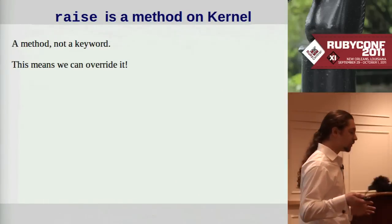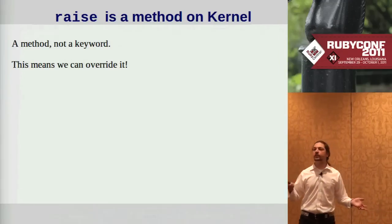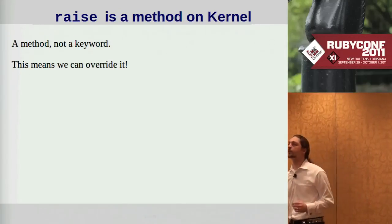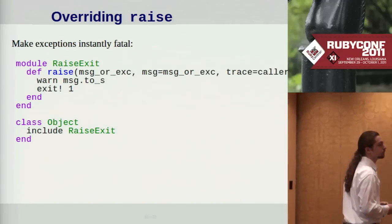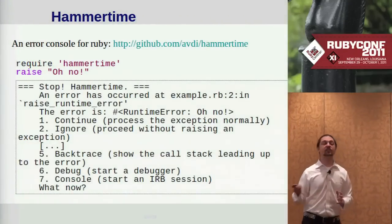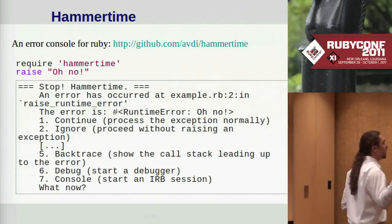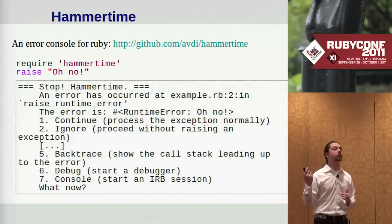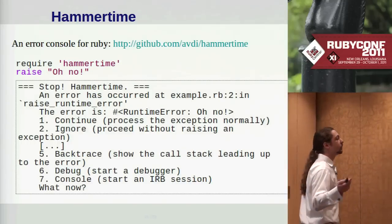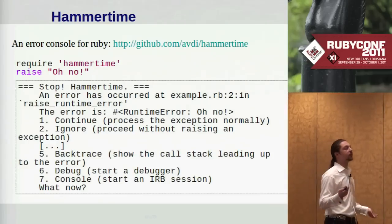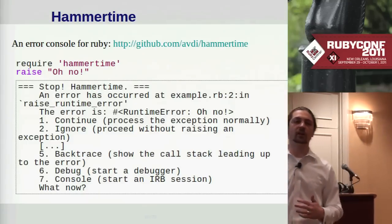One thing some people don't realize about raise in Ruby is that it is a method, not a keyword. That means like any method in Ruby, we can redefine it. Here's a stupid example: we could make all exceptions instantly fatal. A possibly more useful re-implementation is the Hammer Time gem I wrote, which attempts to be a Lisp or Smalltalk style exception error console for Ruby. When an exception is raised, instead of just unwinding the stack, it pops up an interactive console asking if you want to proceed, ignore the error, or debug into the source.